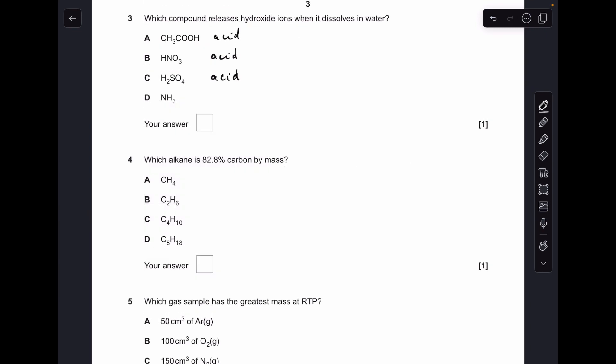Number three: the first three substances are all acids, so if you put them in water they're going to release H+ ions. Ammonia NH3, when you put that into water it becomes NH4OH ammonium hydroxide. Obviously you can see there's OH- ions there, so D was the answer.